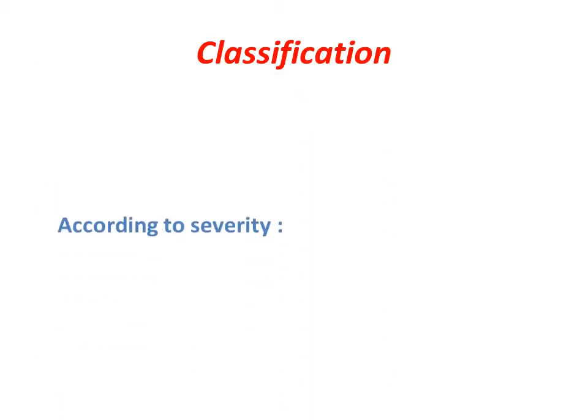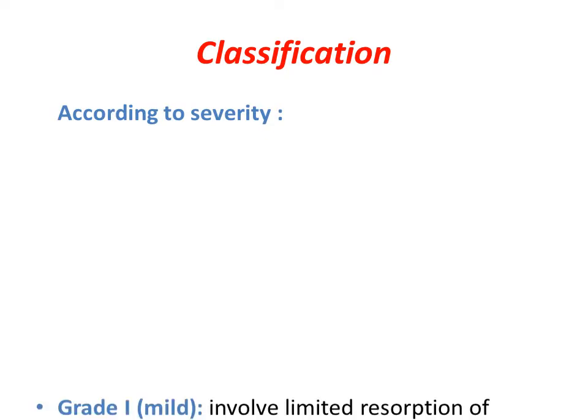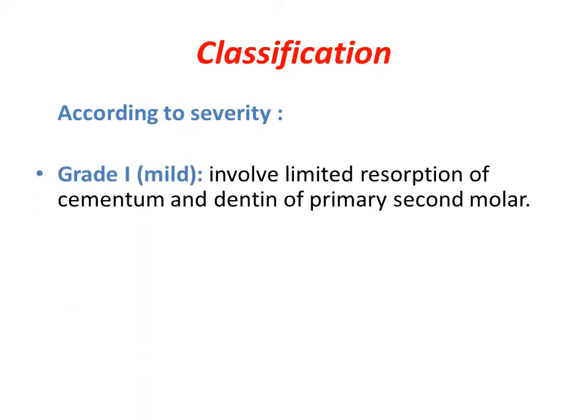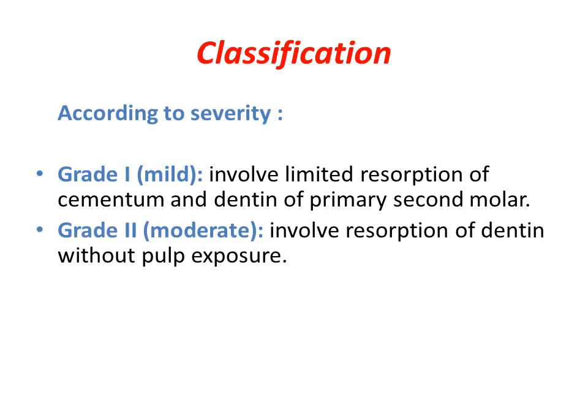Ectopic eruption of the six is classified according to severity into four grades, starting from grade 1, the mild form, to grade 4, the very severe form. In grade 1, the mild form involves limited resorption of cementum and dentine of the E. Grade 2, the moderate form, involves resorption but without pulp exposure.